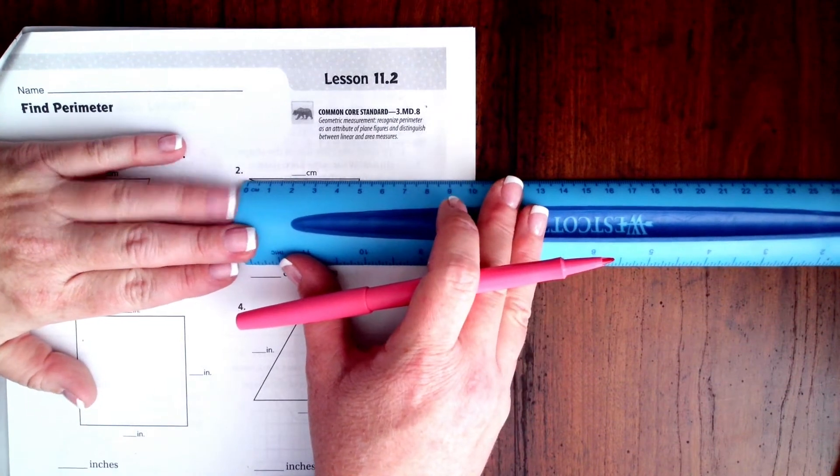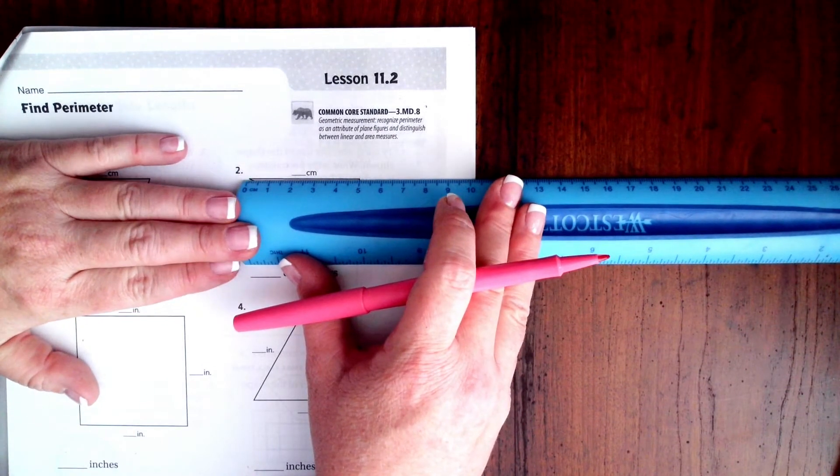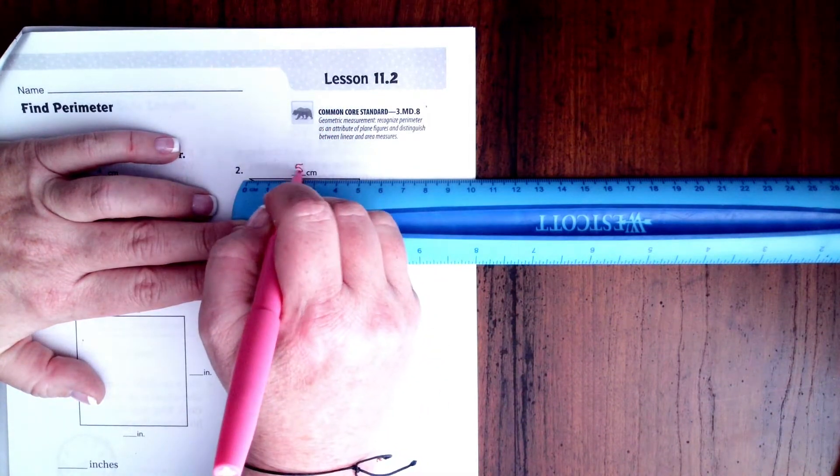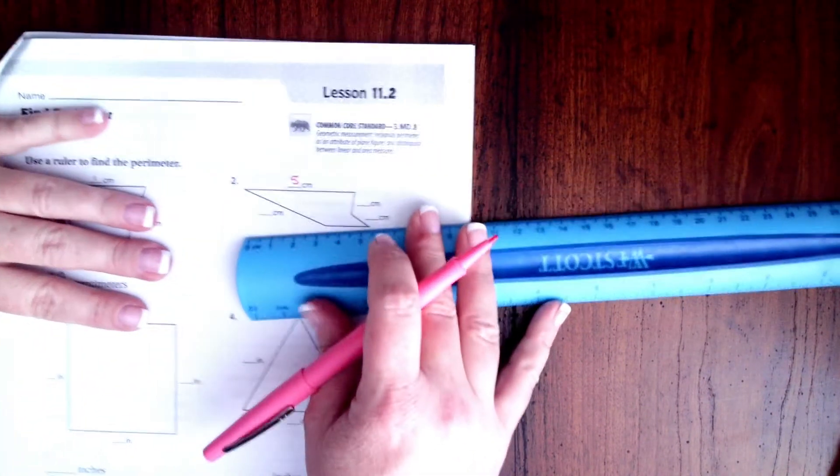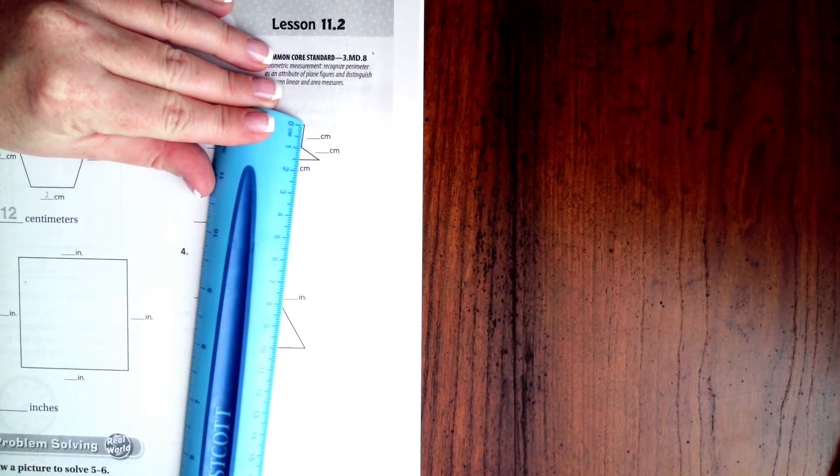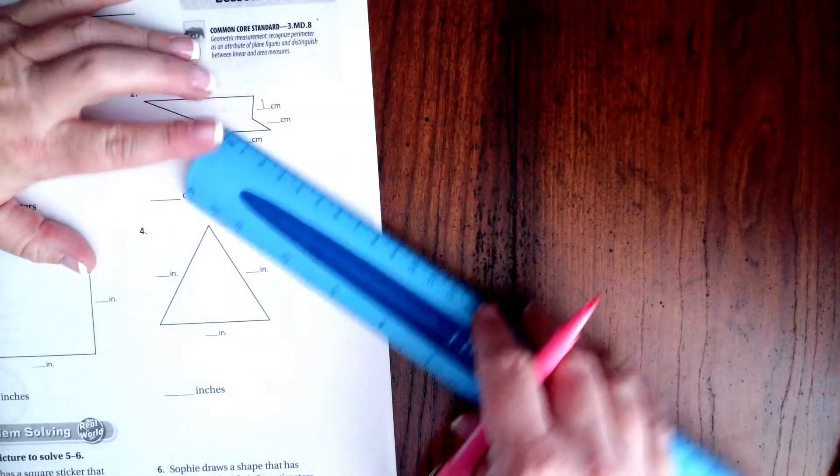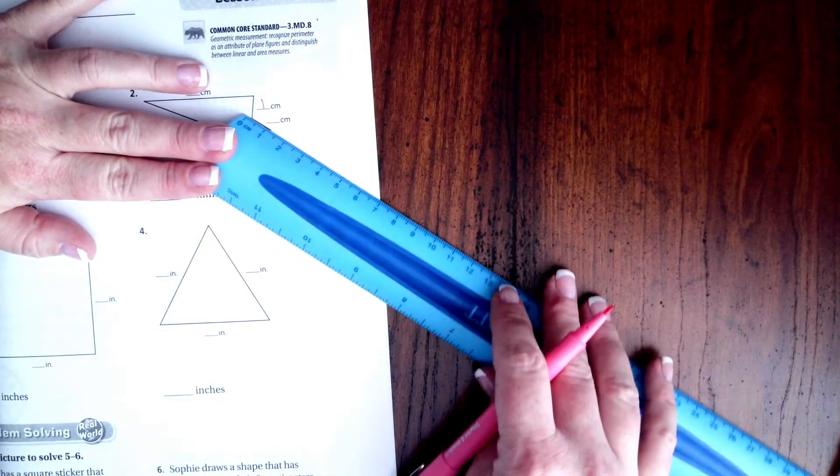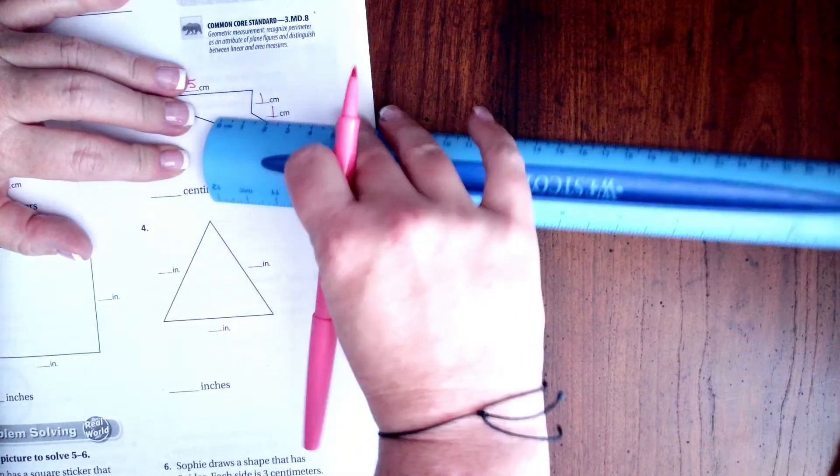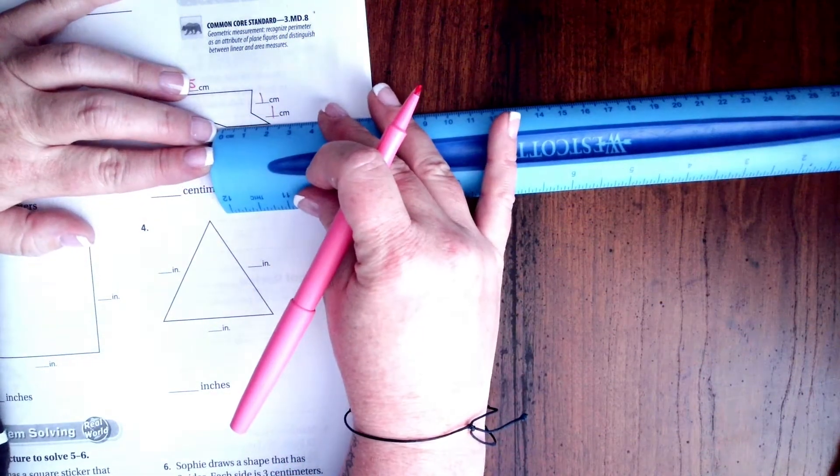So all we're going to do is, instead of having the blocks to tell us, now we have to measure. So this line from zero to five, we're going to put a five right there. This line, we got to angle our ruler a little weird, but that's going to be one. And then this one is also going to be one. This one we're going to measure, it's about two.